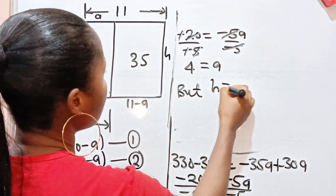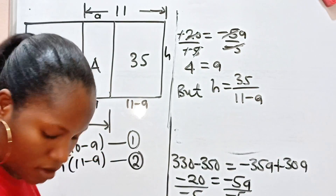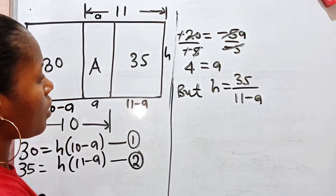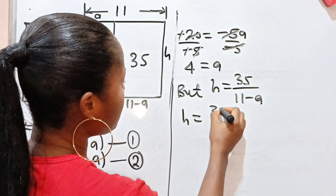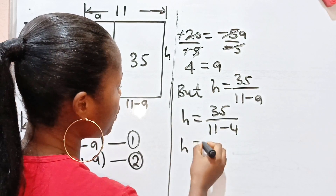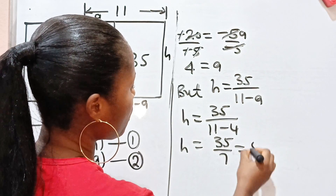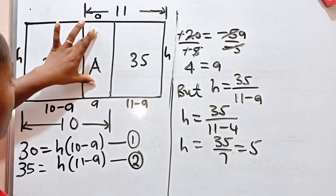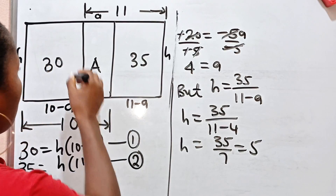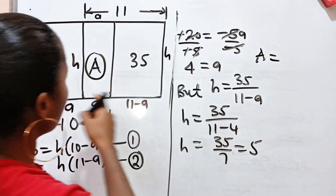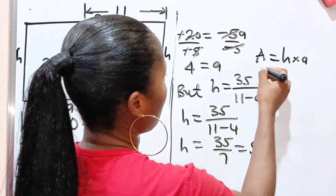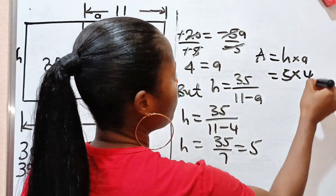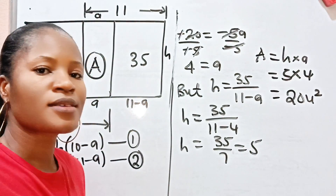Now, h is equal to 35 divided by (11 minus a), so h equals 35 divided by (11 minus 4), which is 35 divided by 7, equal to 5. Please ignore the background noise — it started raining. Remember that area A is equal to h times a, so A equals 5 times 4, which is 20 square units.